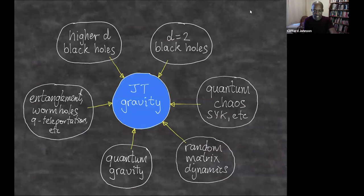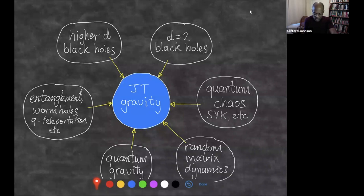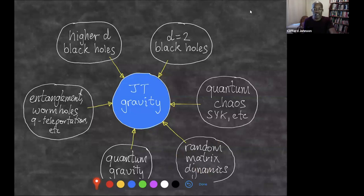These are exciting areas that all intersect and connect through JT gravity. JT gravity plays a role either directly by reduction from higher dimensions, or it is a laboratory in its own right for studying aspects of two-dimensional black hole physics. It's a model of two-dimensional quantum gravity. There's a low energy duality to systems such as SYK, so it's a good diagnostic for aspects of quantum chaos. It's also a wonderful laboratory for understanding random matrix dynamics, and the connections between these corners are very interesting and fruitful.